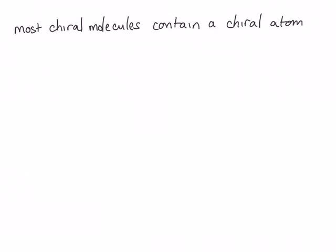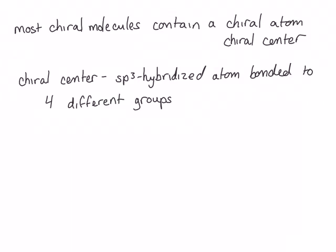Most chiral molecules contain a chiral carbon atom, which we call a chiral center. In organic chemistry, a chiral center is an sp3 hybridized atom bonded to four different groups — most often a carbon atom, though it doesn't always have to be. For example, the molecule 2-bromobutane contains a chiral center: the sp3 hybridized carbon bonded to four different groups — a methyl, a bromine, an ethyl, and a hydrogen. Let's draw this out in three dimensions to make it more obvious.